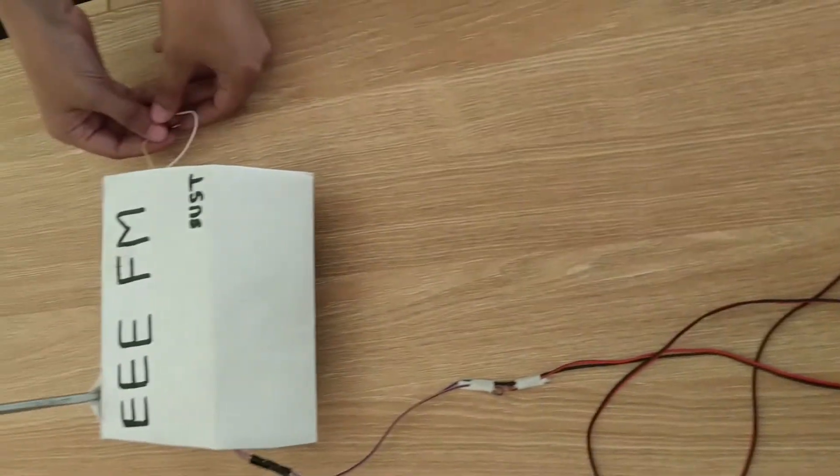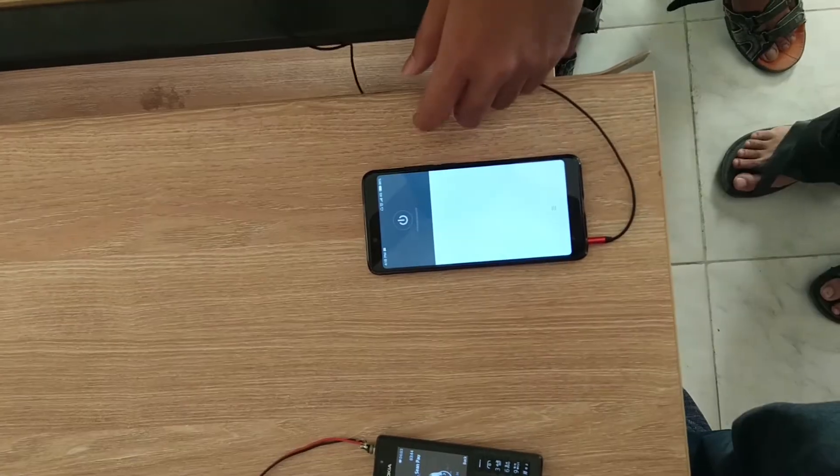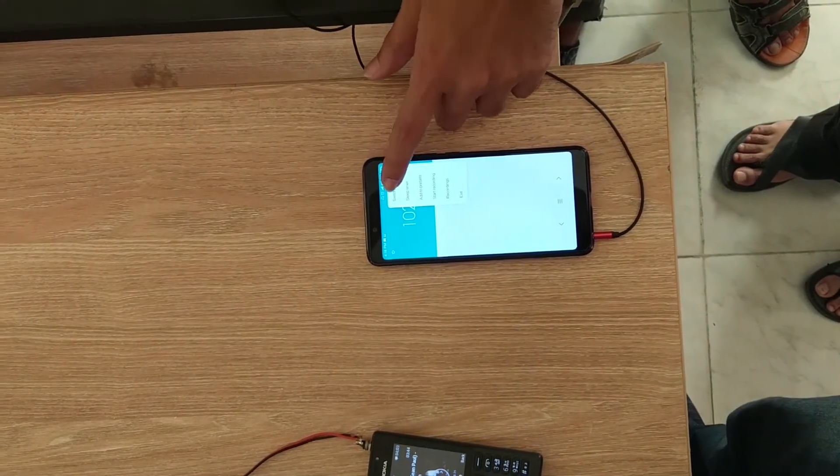This is our audio signal. We're going to transmit this signal through the transmitter and the radio app of this smartphone is going to receive it.